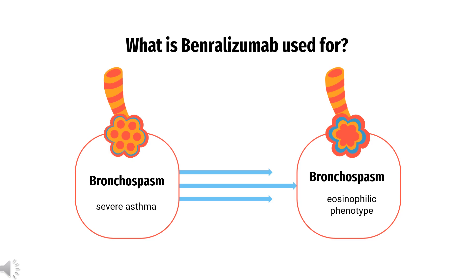In the Th2-high phenotype, IL-5 plays a central role as it is responsible for eosinophil differentiation, survival, activation, and migration to the lungs.